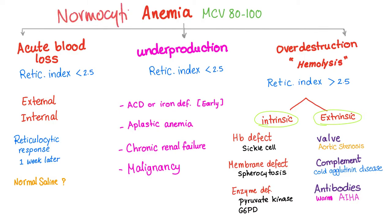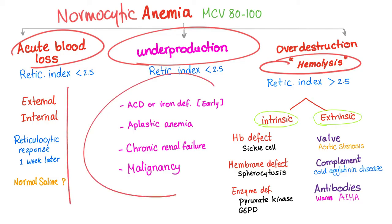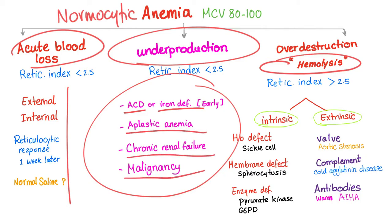Normocytic anemia can be due to acute blood loss, underproduction, or over-destruction — hemolysis. We have talked about underproduction: anemia of chronic disease, iron deficiency, aplastic anemia, chronic renal failure, malignancy. And we are still here in hemolytic anemia. These underproduction anemias will have low reticulocyte count. Hemolysis will have high reticulocyte count, provided that the bone marrow is good enough to respond and produce a lot of cells, including baby red blood cells which are reticulocytes.